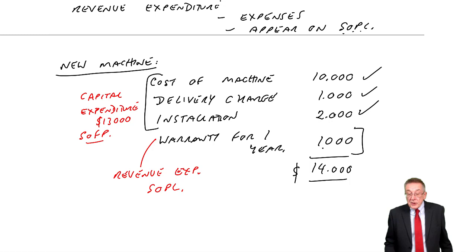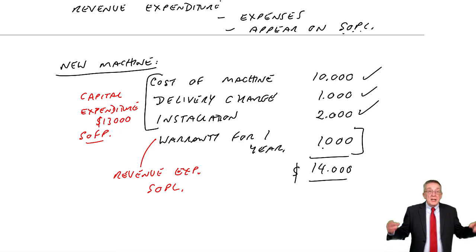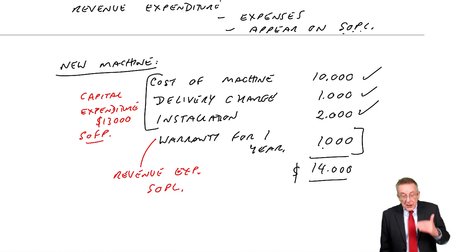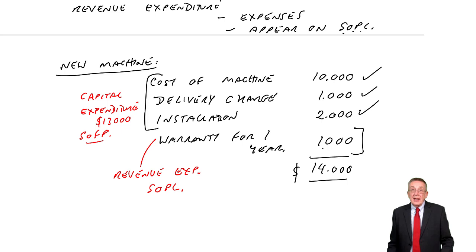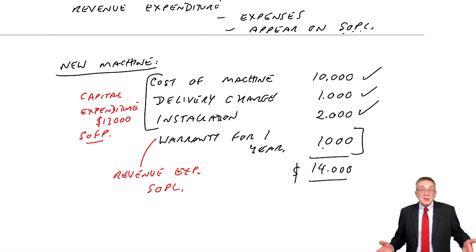In most questions that's not a problem — you buy a machine for £10,000, finished. But if you're ever given an invoice made up of several items, remember: capital expenditure on the statement of financial position covers costs involved in actually getting it in the building ready to work. Any costs like the warranty that were not necessary to get it working are revenue expenses on the statement of profit or loss.